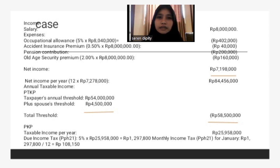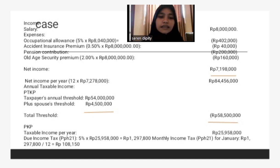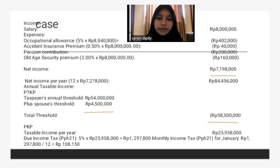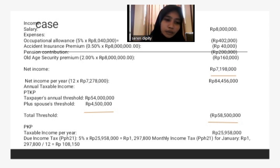Based on government policy, the applicable tax rate is 5%, multiplied by the taxable income of 25,958,000 rupiah per year, equaling 1,297,800 rupiah annually. If he wants to pay monthly, we divide by 12 months, which equals 108,150 rupiah per month.